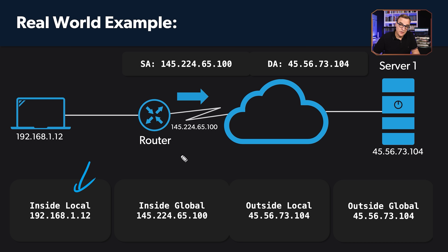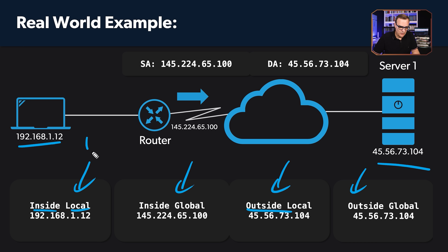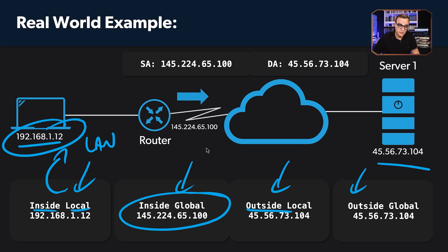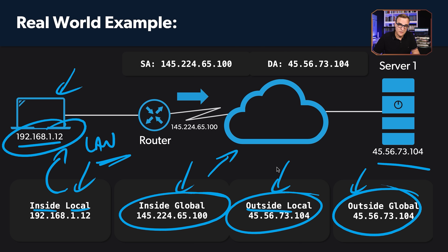Make sure that you learn these terms: inside local, inside global, outside local, outside global. Inside refers to our inside host; outside refers to our outside host. Local refers to the local area network — this is what the IP address looks like on the LAN. Global refers to the global internet — this is what the IP address looks like on the internet. The server's IP address on the local LAN and on the global internet are the same, because we are not NATing the server's IP address.